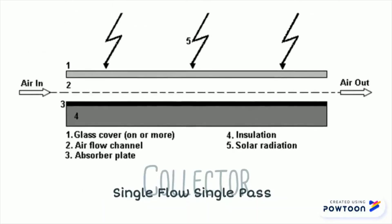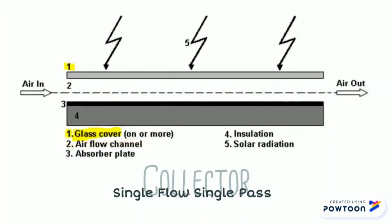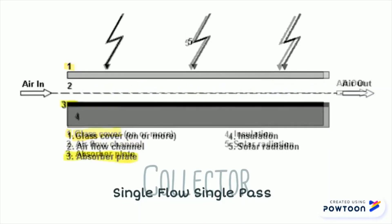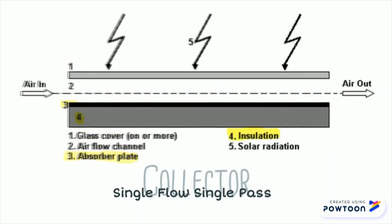Collector. The single flow single pass is the simplest type of solar air heater and mainly consists of an air flow channel, a transparent cover, an absorber, and insulation material in the bottom of the absorber.